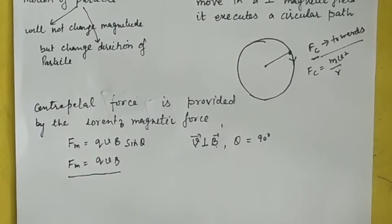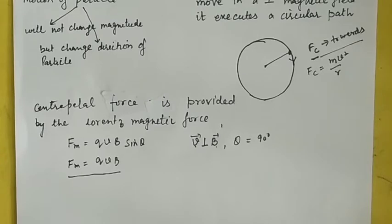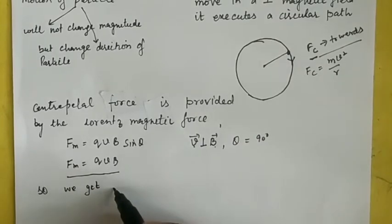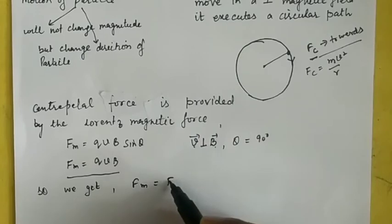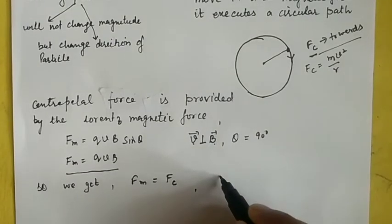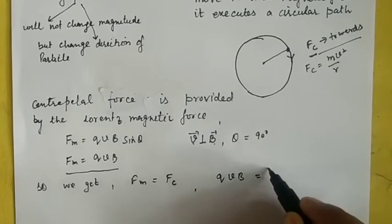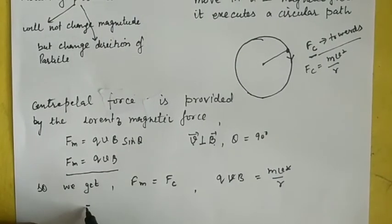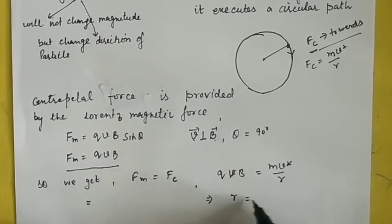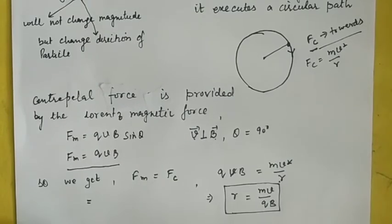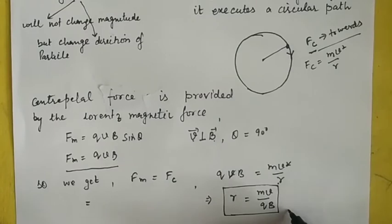Setting the Lorentz magnetic force equal to the centripetal force: QVB = mv²/r. Solving for the radius r, one V cancels, giving r = mv / (QB). This is the radius of the circular path of a charged particle moving in a perpendicular magnetic field.